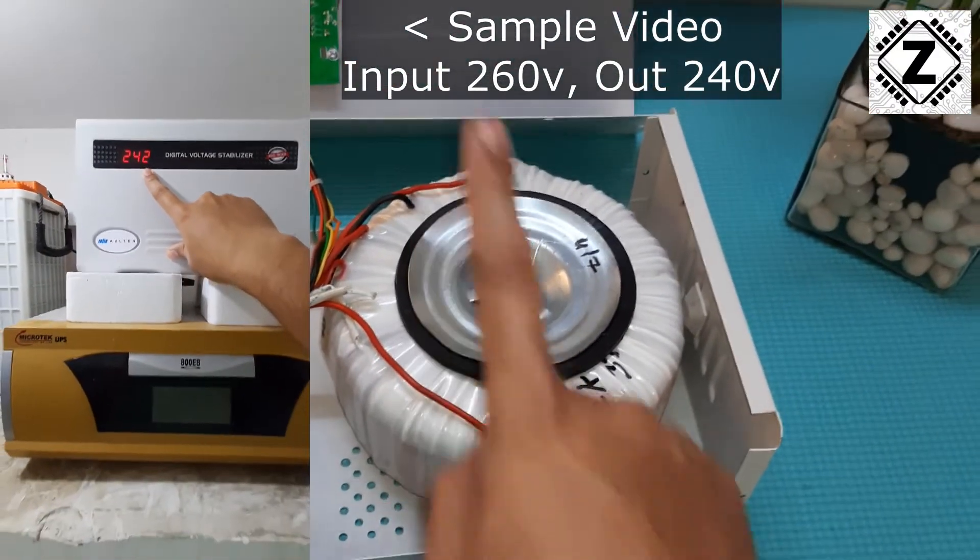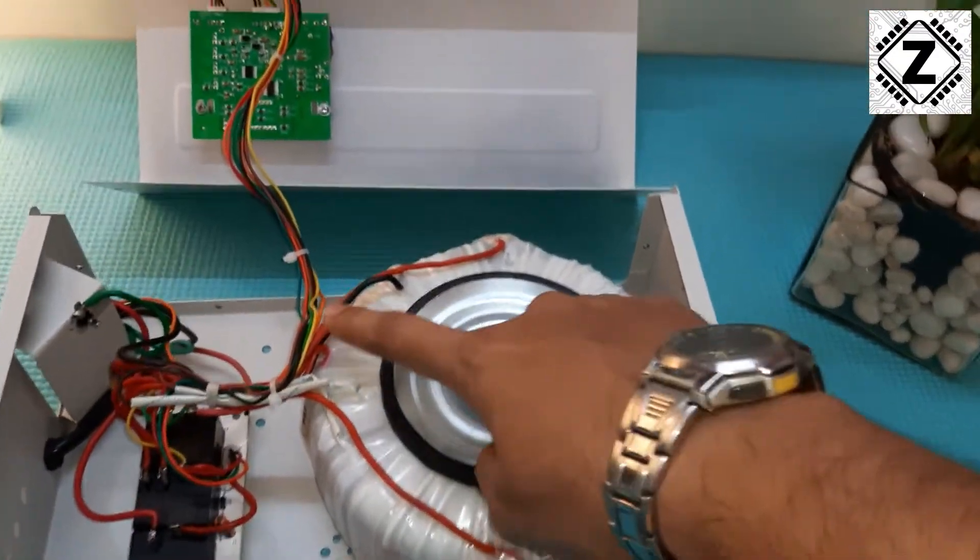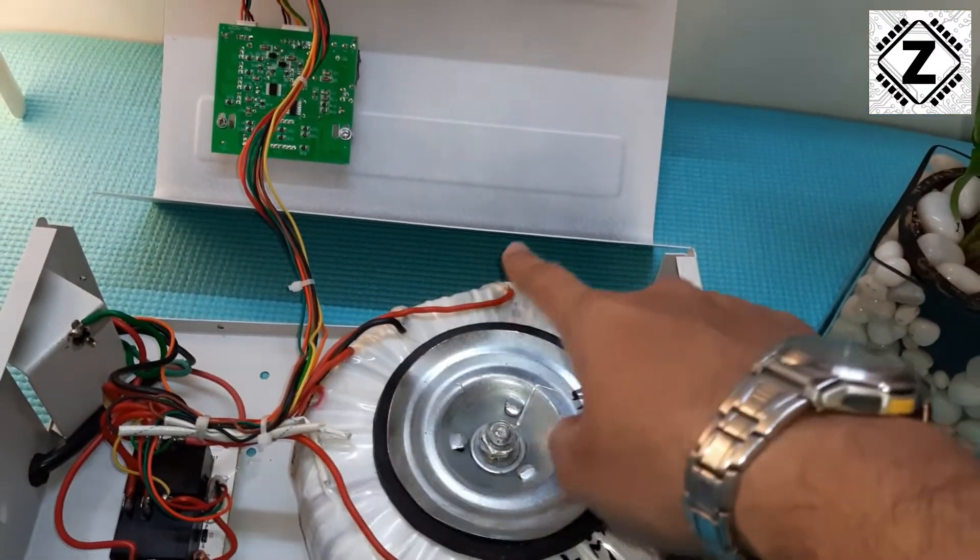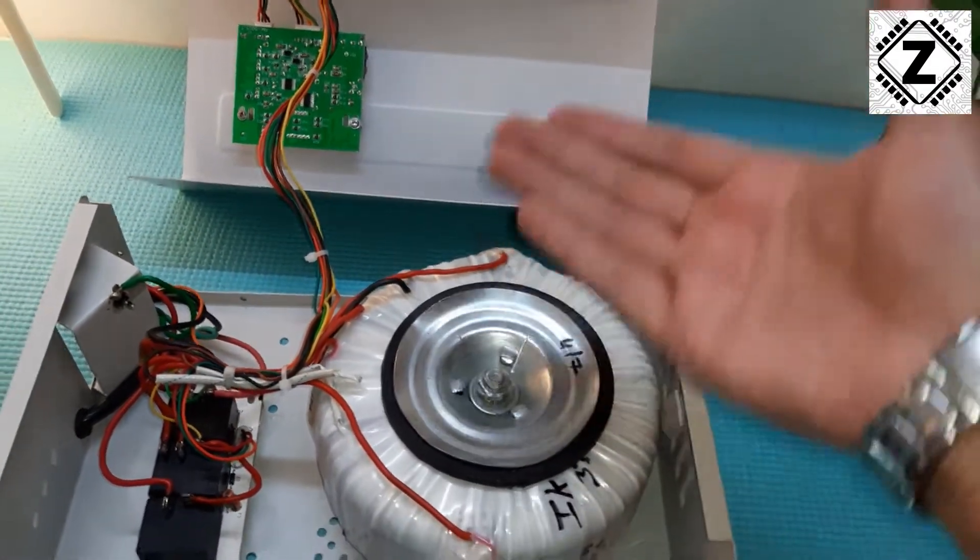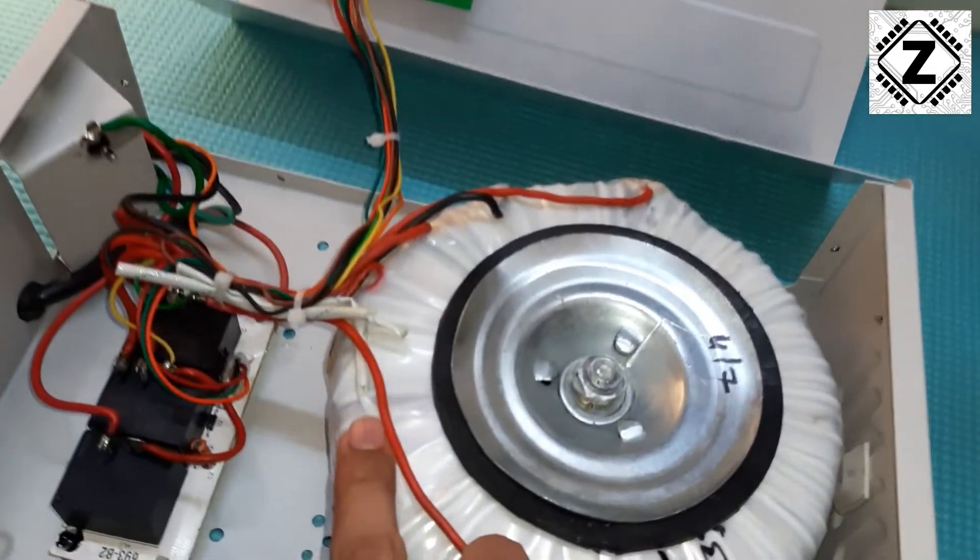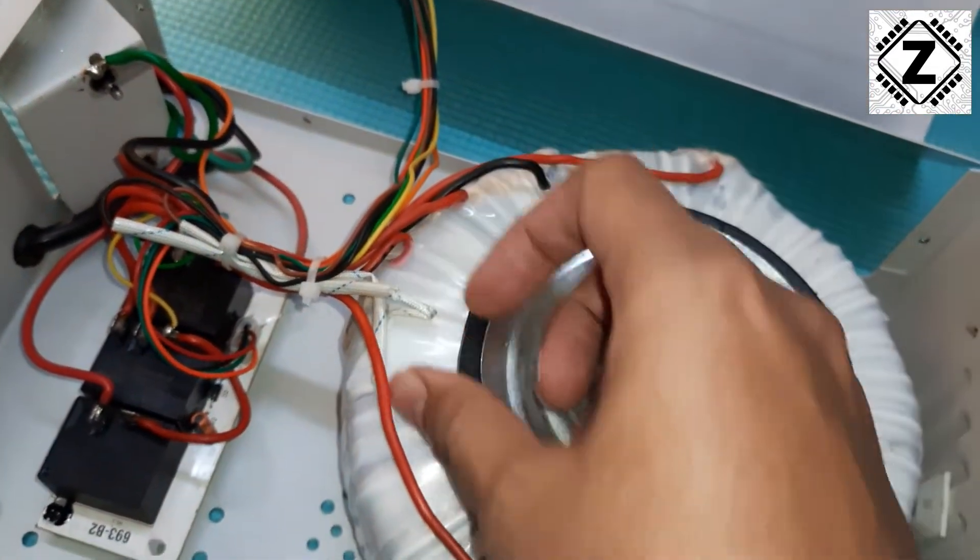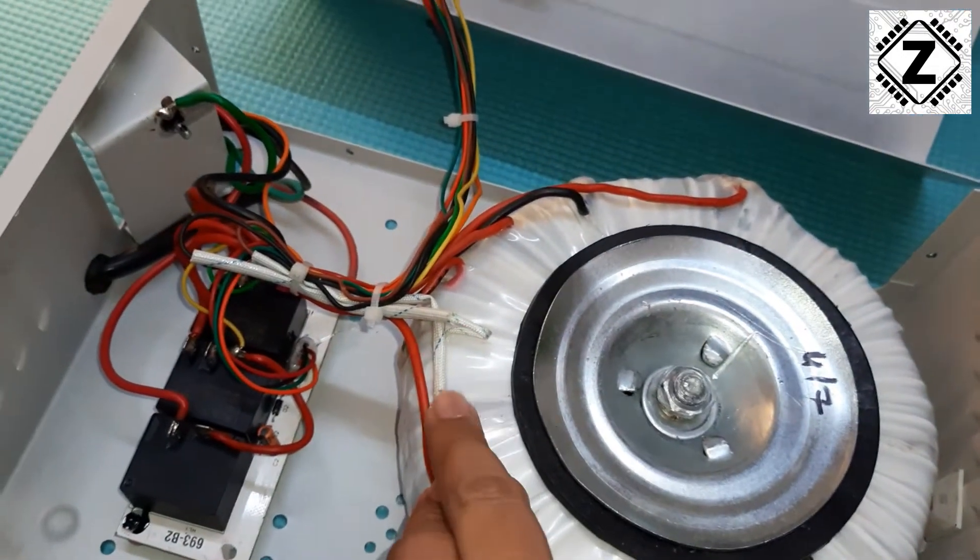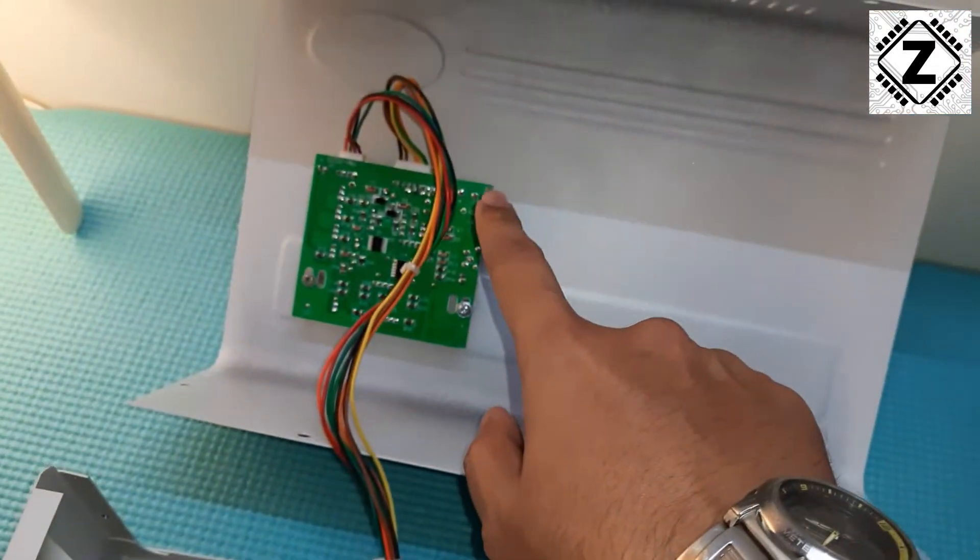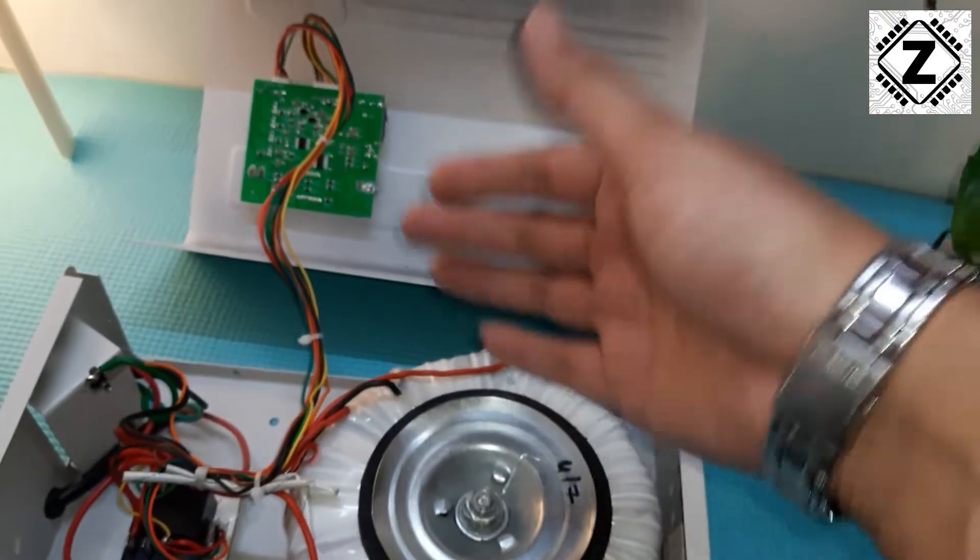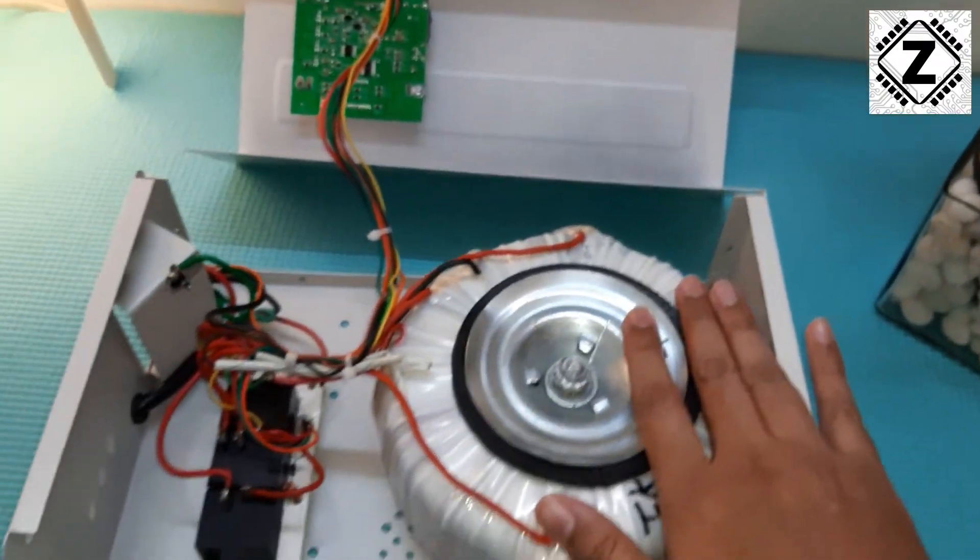tap is going to step it down. So it has one step-down tap and it has three booster taps, that is, the step-up taps. Plus there's this mysterious winding over here. Any guesses what is this? So guys, this thing actually provides power to the circuit.